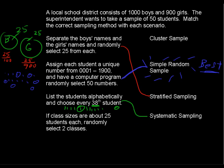Now, if class sizes are 25 students each, randomly select two classes. Now, it's our last choice, but let's think about why this is cluster sampling.